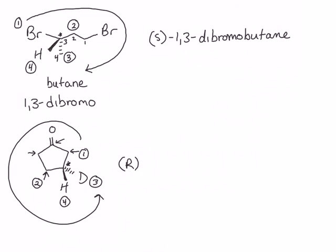Let's look at one final example. This molecule has a single stereocenter — an sp3-hybridized carbon with four different groups bound to it, including a hydrogen. All other substituents are carbons. One carbon is bound to two carbons while the others are bound to one carbon and two hydrogens. Additionally, the double bond is accounted for by treating that carbon as bound to three carbons — once for the single bond and twice for the double bond. This makes the carbon with the double bond our highest priority group.